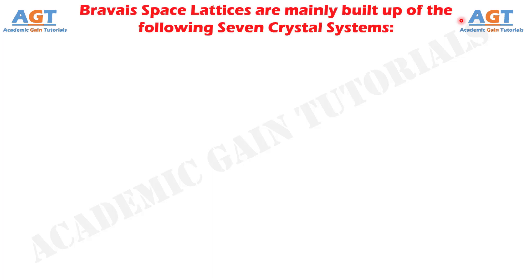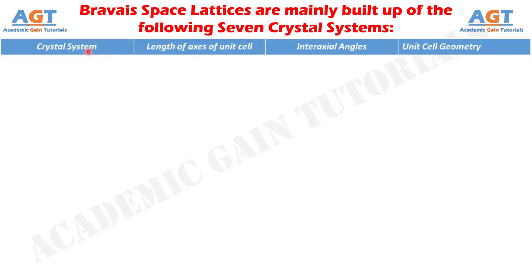Bravais lattice refers to the 14 different three-dimensional configurations into which atoms can be arranged in crystals. The Bravais space lattices are mainly built up of the seven crystal systems. Using this table we will look into the seven crystal systems based on which the Bravais space lattices are built up.